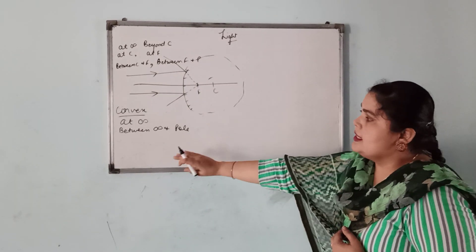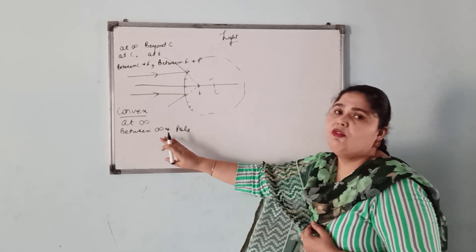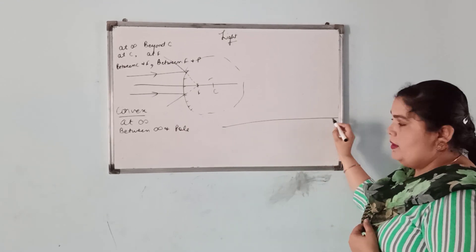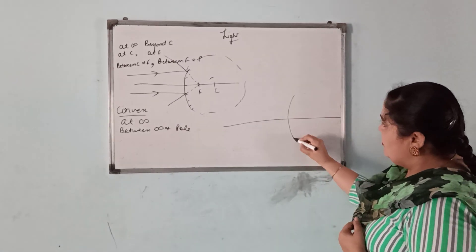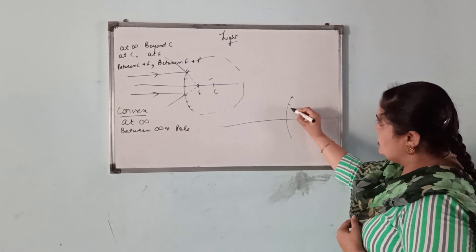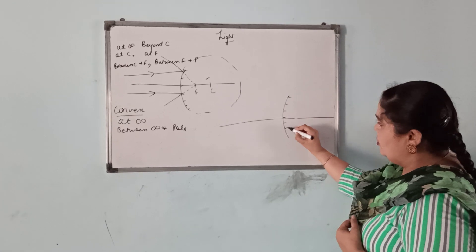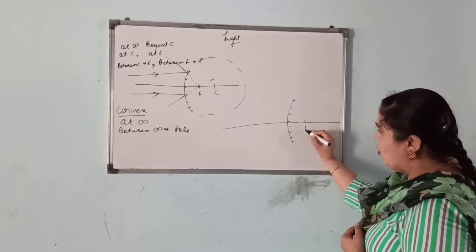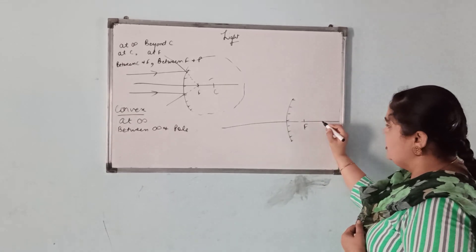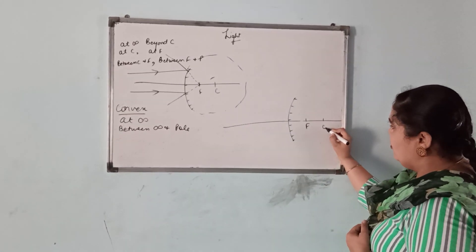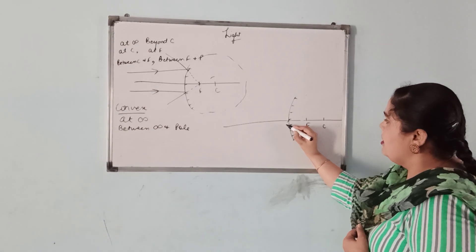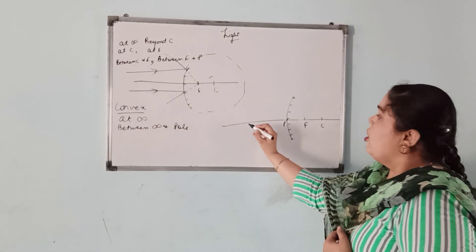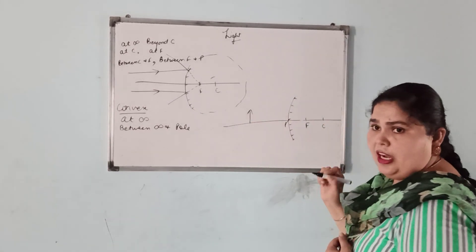Now the second case: object between infinity and the pole. I will make a principal axis and a convex mirror. This is the center of curvature, the focus, and the center of the mirror. This is the pole. If the object is placed anywhere between infinity and the pole, we need to draw the ray diagram.